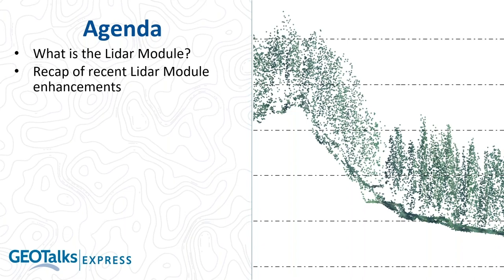Jeff is going to talk about some recent updates. Global Mapper is continually in development, and there have been many interesting tools added recently. For version 22.1, we'll look at the building extraction tool — which addresses the use case of extracting vector features from point cloud data — as well as enhancements to terrain painting, new options in the Pixels to Points tool, 3D view saving, and new default settings for loading point cloud data.